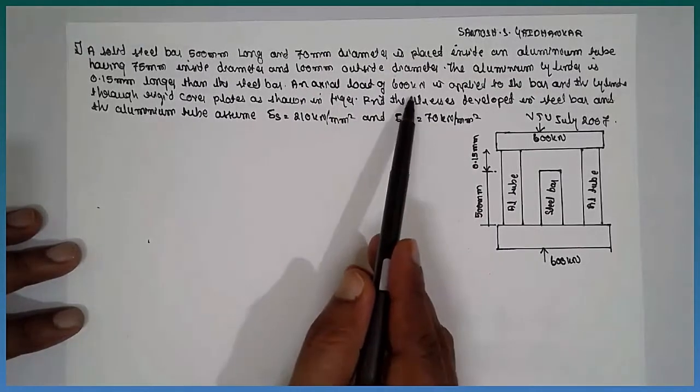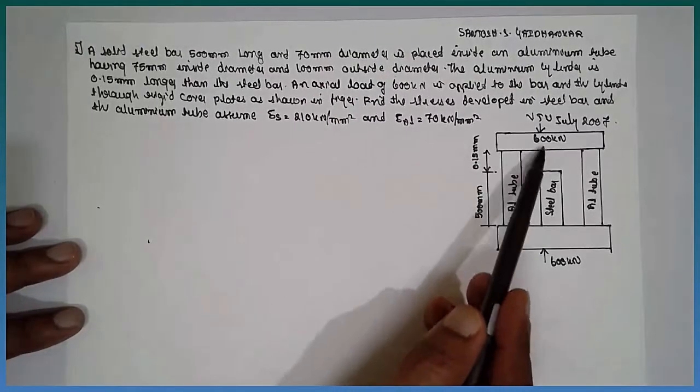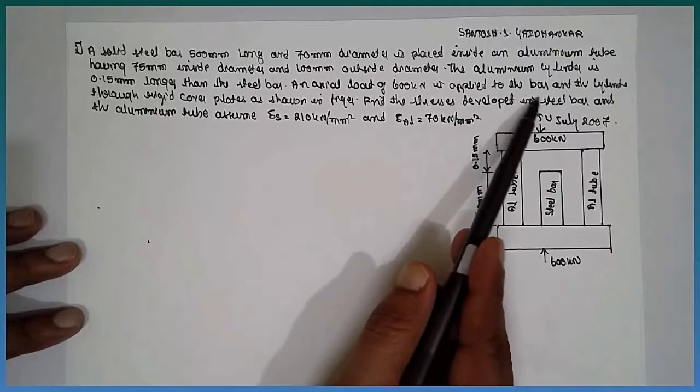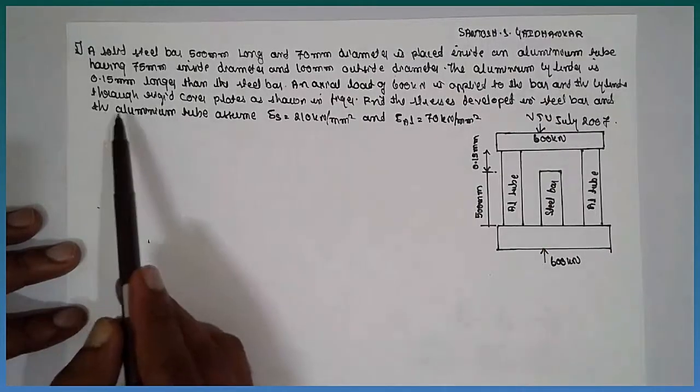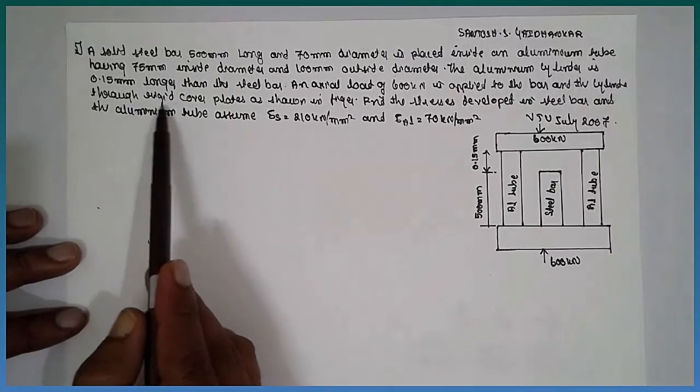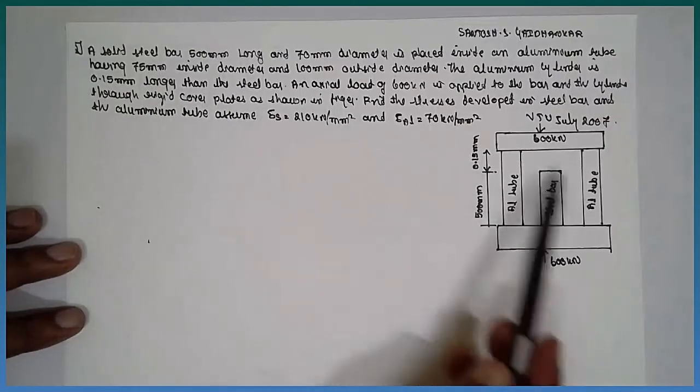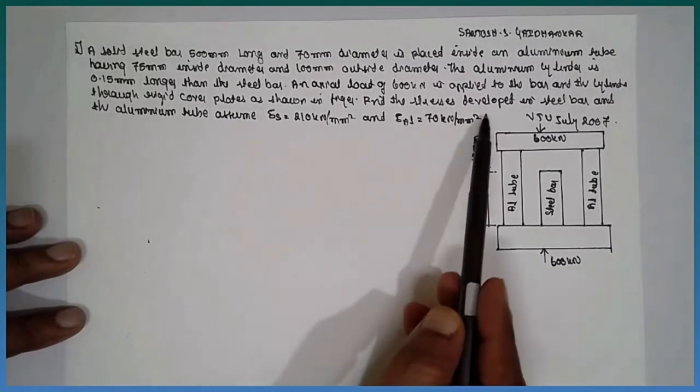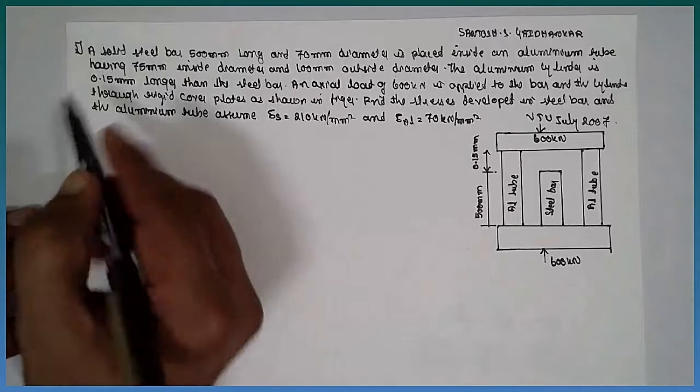The axial load of 600 kN is applied to the bar and the cylinder through a rigidly curved plate as shown in the figure. Find the stresses developed.